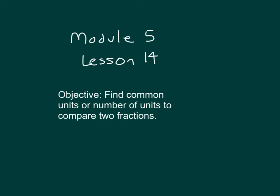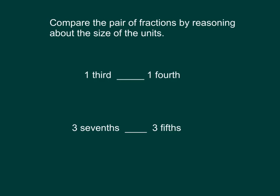Within this lesson, we'll find common units or number of units to compare two fractions. Within this example, we're asked to compare the pair of fractions by reasoning about the size of the units. So within this first example, we're comparing thirds with fourths, and we have the same number of units that we're comparing — one and one. So we're looking at one-third versus one-fourth.